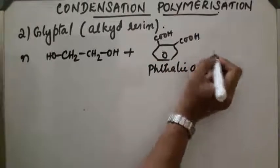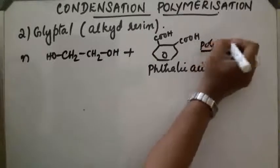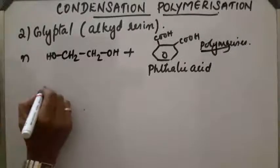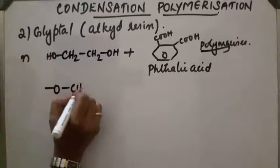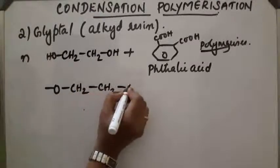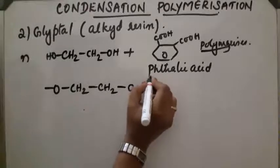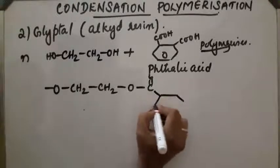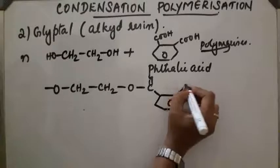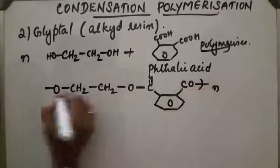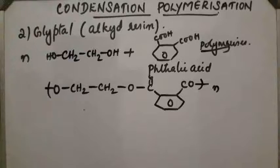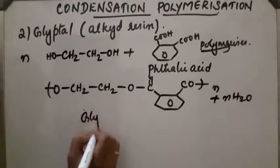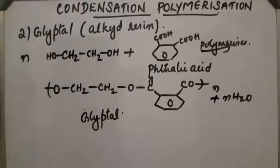The monomers polymerize and a water molecule is removed. The product obtained is CH2, CH2O, then CO, N times. This is called glyptol, also known as alkyd resin.